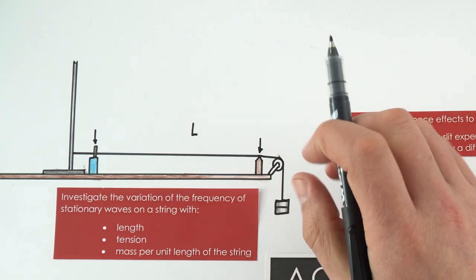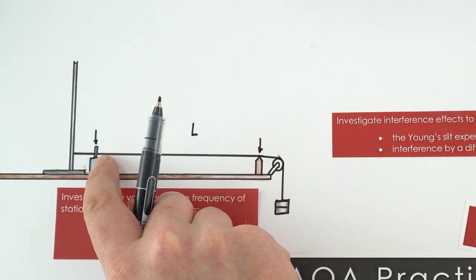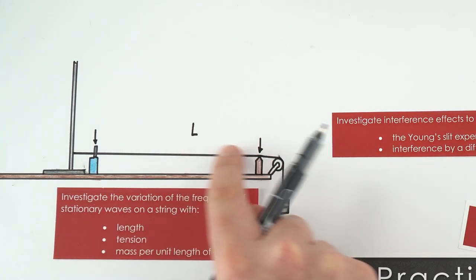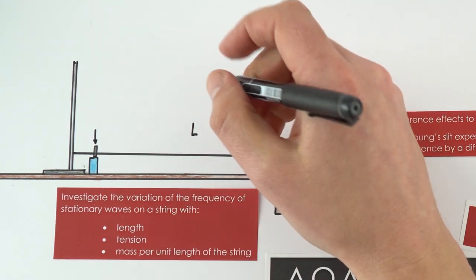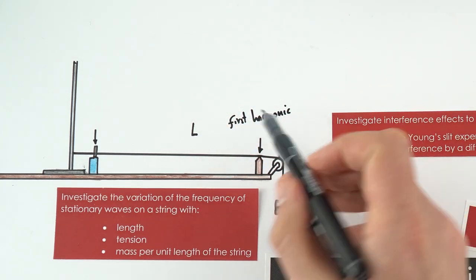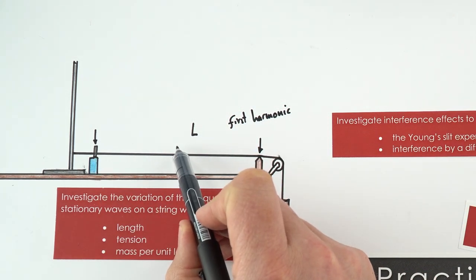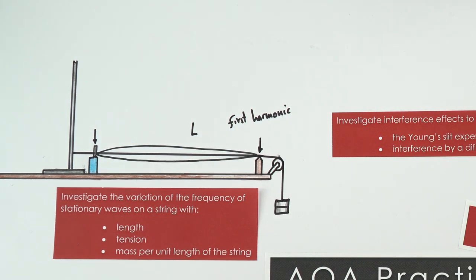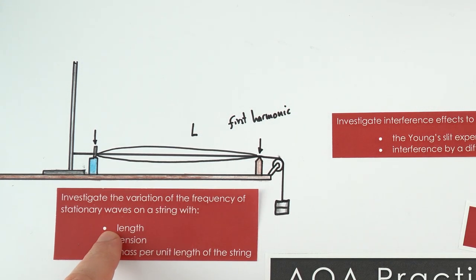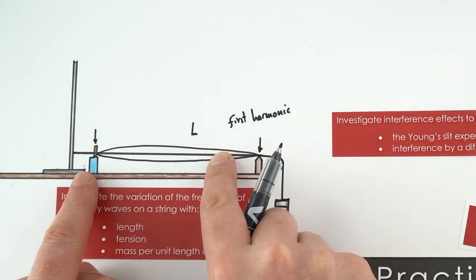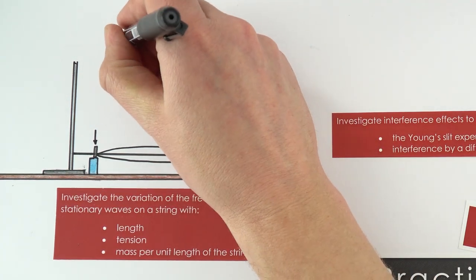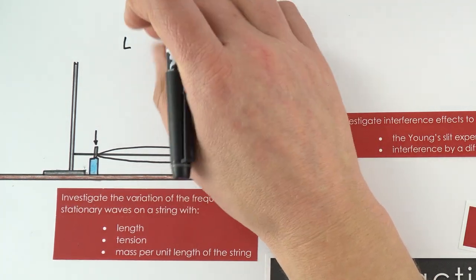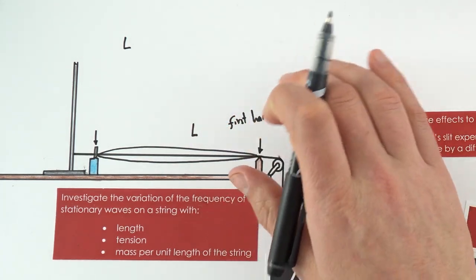At a certain frequency, you get a standing wave. The wave we're interested in is our first harmonic at the fundamental frequency - a wave with a node at each end and an antinode in the middle. In this experiment, we look at how frequency depends on certain factors. We can change the length by moving the bridge along, which moves the node position. The length might vary from maybe 0.5 to about a metre, depending on the setup at your school.